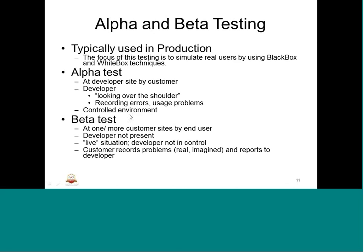Beta testing is done at one or more customer sites by end users - the real user of that product tests it at the customer site. The developer is not involved in beta testing; it is something like a live situation where the product is on the market or in the field. The developer will only be reported of issues coming out of beta testing. There are a few differences: alpha testing is performed by testers who are usually internal employees of the organization; beta testing is performed by clients or users who are not employees.